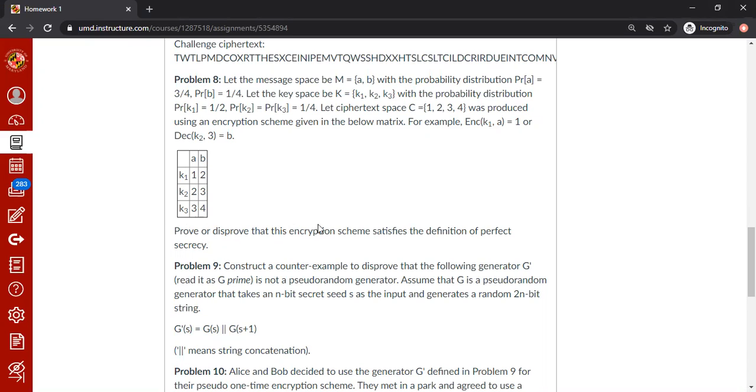I will summarize it very briefly. So if a scheme satisfies this condition that, suppose m is your message, m is a random variable denoting the message space, and c is the ciphertext denoting the cipher space. If this probability is equal to probability of m,